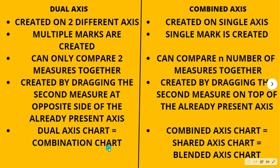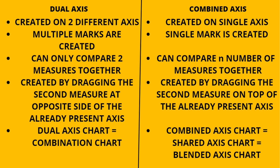A dual axis chart is also known as a combination chart, and a combined axis chart is also known as a shared axis chart or a blended axis chart. Many people get confused about the terminology, so remember: dual axis = combination chart, and combined axis = shared axis or blended axis chart. A combined axis bar chart is also sometimes known as a side-by-side bar chart. That's all about this video — thank you so much, bye!